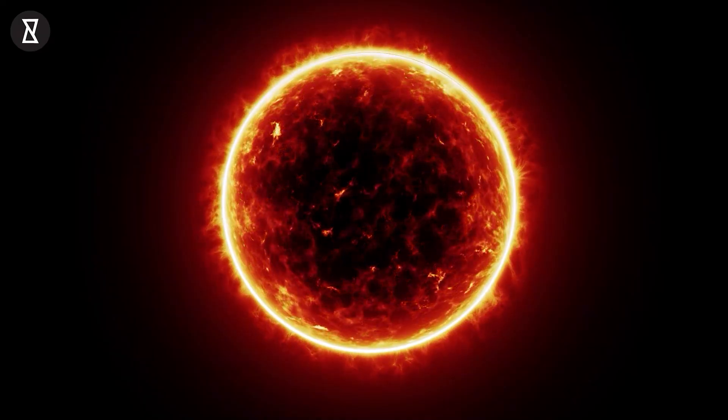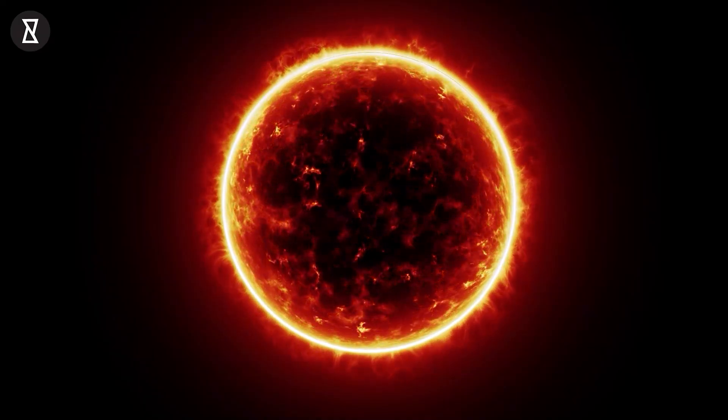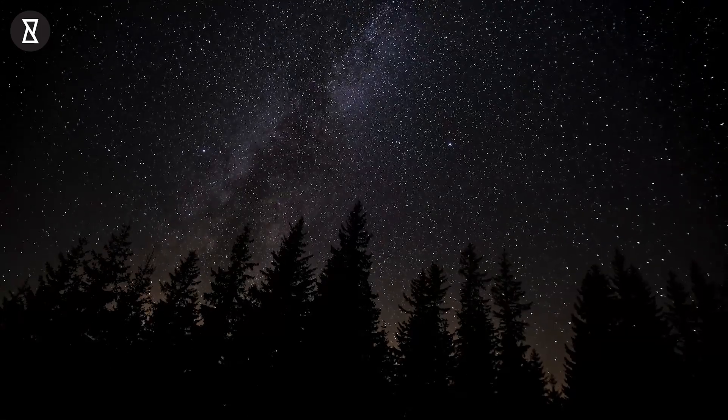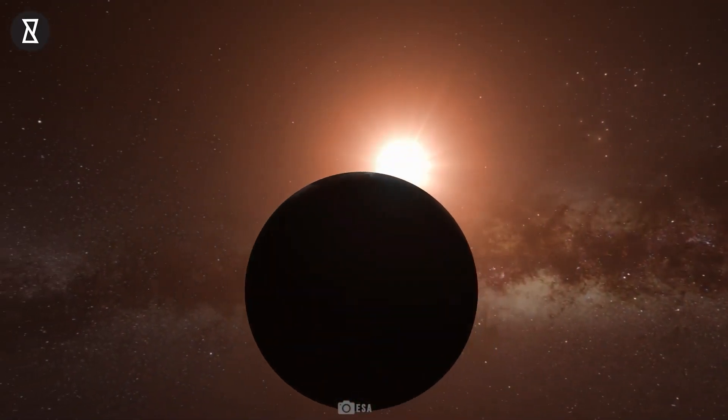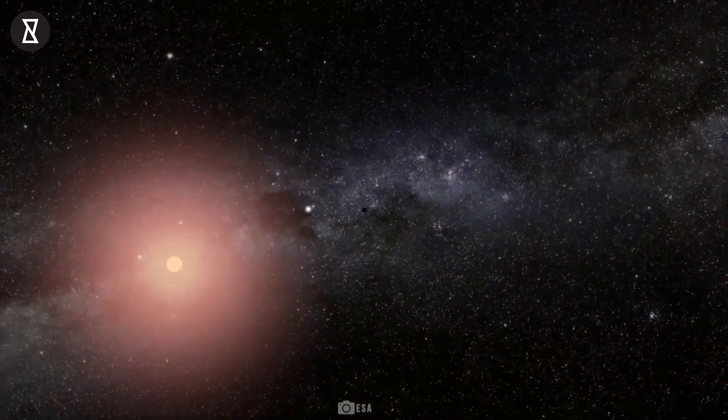Proxima Centauri is 500 times dimmer compared to our sun and hence not visible to the naked eye. But the star system is very significant to us in our quest to finding alien life.